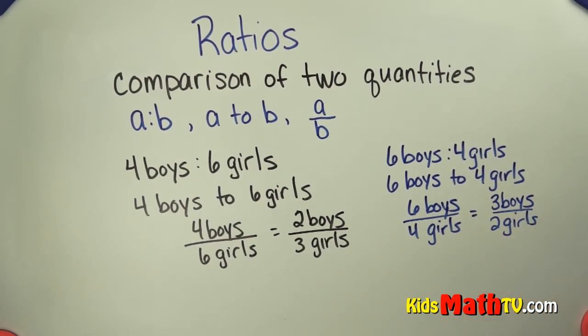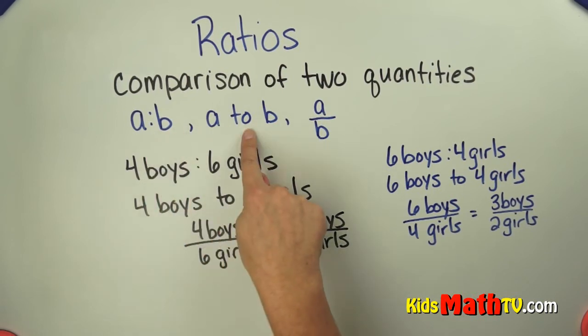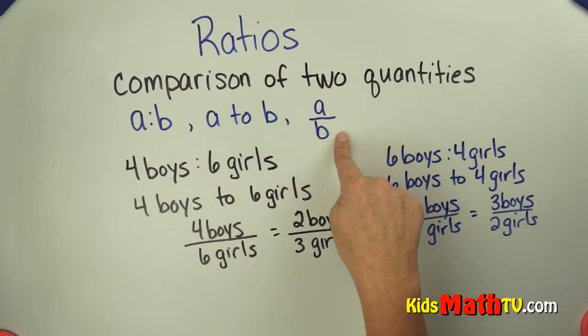The labels are also very important when it comes to ratios to know which quantity you're talking about. So making sure you have the correct order. You can write it in three ways: with a colon, with the word to, or in a fraction. But they're all read the same way, and they're all comparing two quantities together.